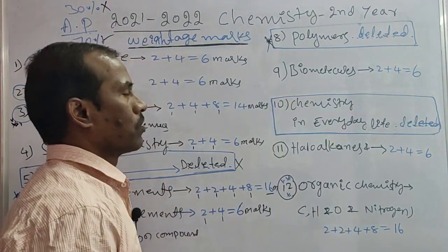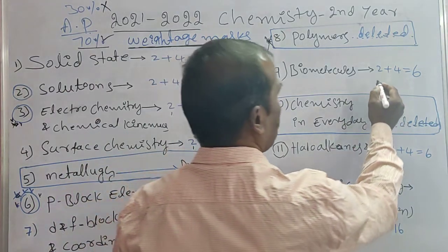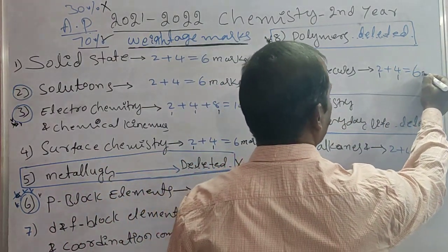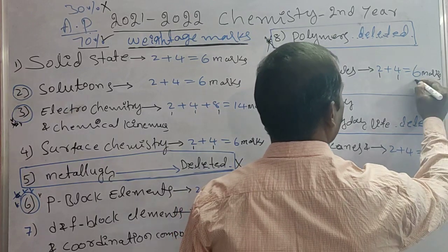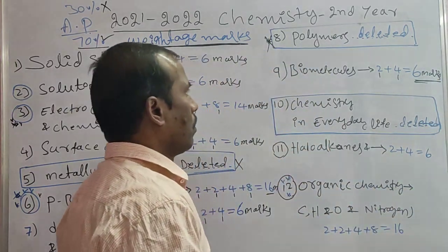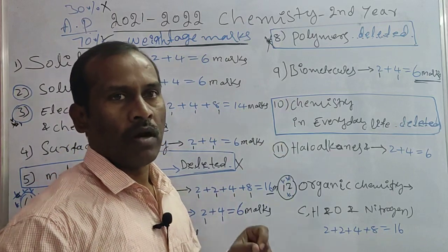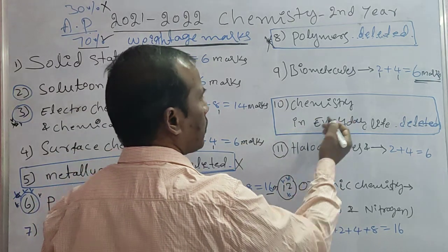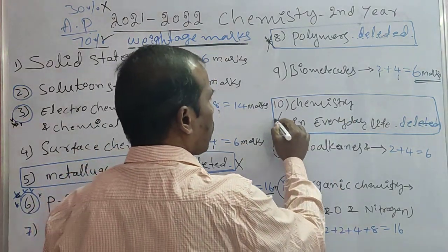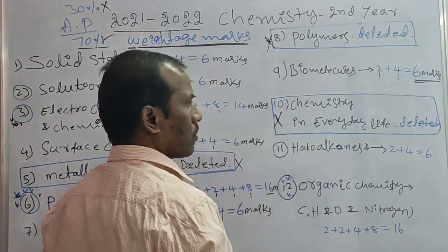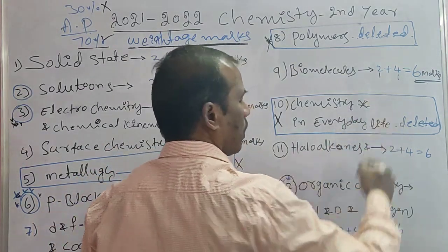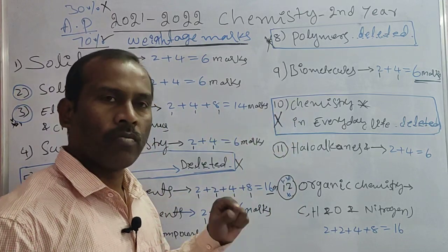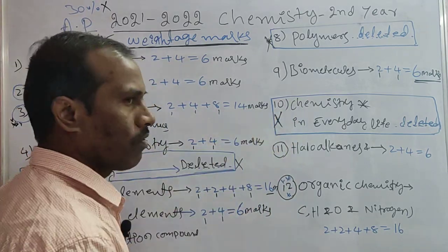Ninth topic: Biomolecules. Very short answers 1. Total marks are 6 marks. Tenth topic: Chemistry in Everyday Life — this is also deleted from the syllabus. A good amount of content has been removed from this subject, so the 10th topic is also removed from the syllabus.